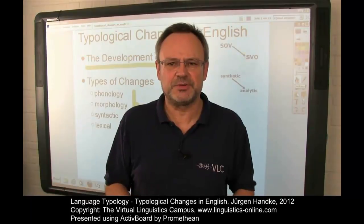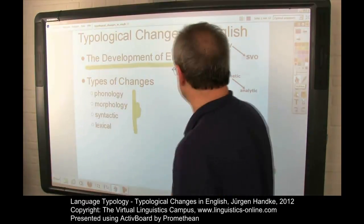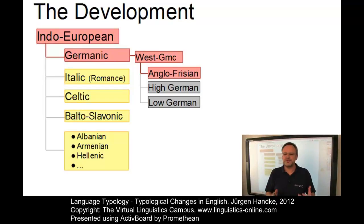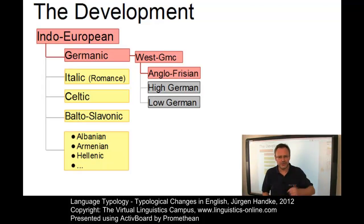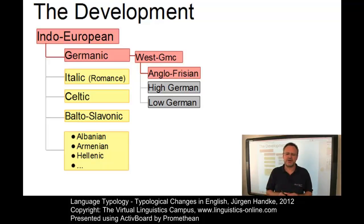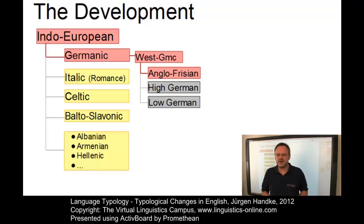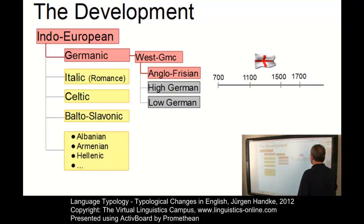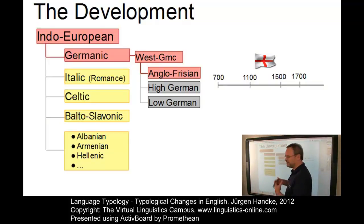Let us look at the general development first. English is the language of the Anglo-Frisian group of the West Germanic branch of the Indo-European language family. Its origin goes back to the 5th century after Christ when Germanic tribes invaded Britain. Its development can be subdivided into a number of linguistically definable periods.